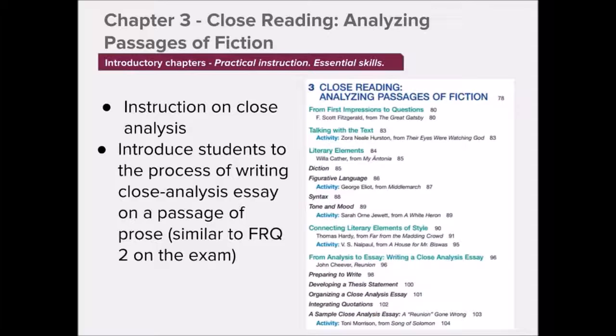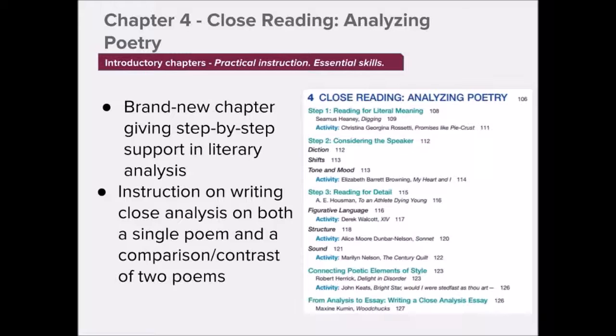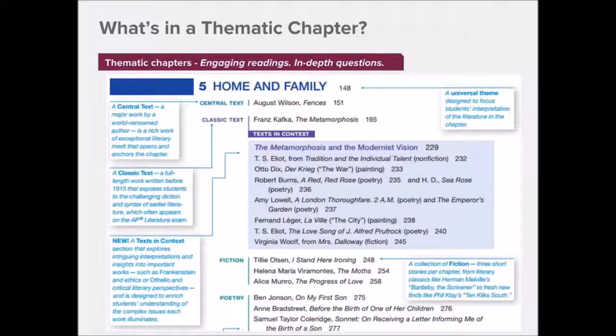Another chapter includes instruction on close analysis, revealing how the elements of style create meaning in fiction, and introduces students to the process of writing a close analysis essay on a passage of prose — the type of essay required by free response question 2 on the AP Literature exam. A brand new chapter provides step-by-step support in the type of literary analysis that is often the hardest for students to master, introducing close reading strategies that connect elements of style to meaning in poetry, and offering instruction on writing a close analysis of both a single poem and a compare-and-contrast of two poems. It's proven yearly that some students score poorly because they discuss stylistic and literary elements without connecting their analysis to the complexity of the work.